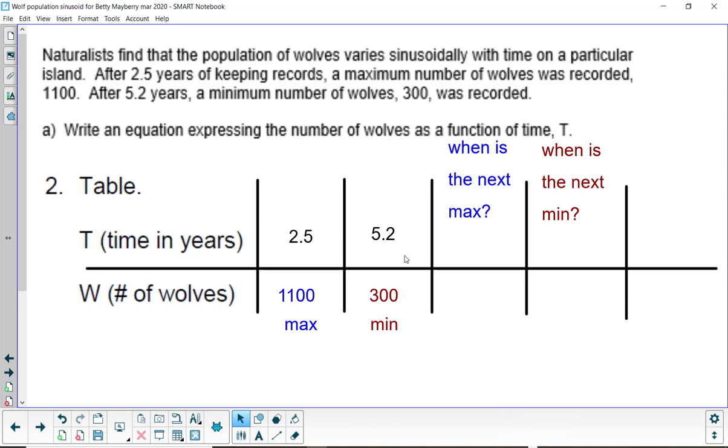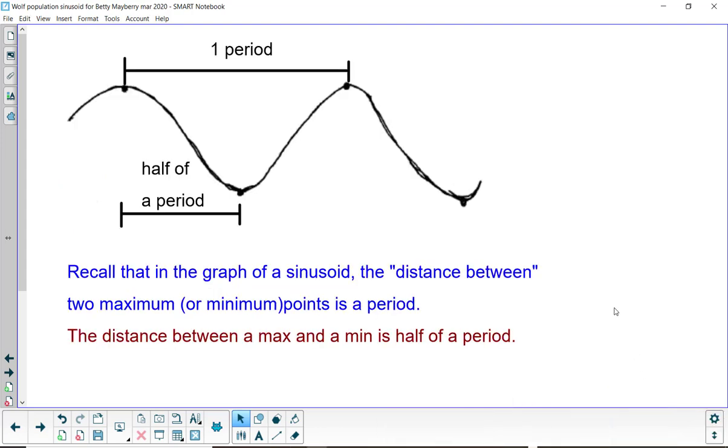And we know that this is a maximum, and that this is a minimum. We should be able to extend this table, knowing what we know about sinusoids. We should be able to predict when is the next maximum and get an ordered pair here. And when is the next minimum and get an ordered pair here. As a reminder, the distance between two maximum points is a whole period. And the distance horizontally is going to be half a period from a maximum to a minimum.